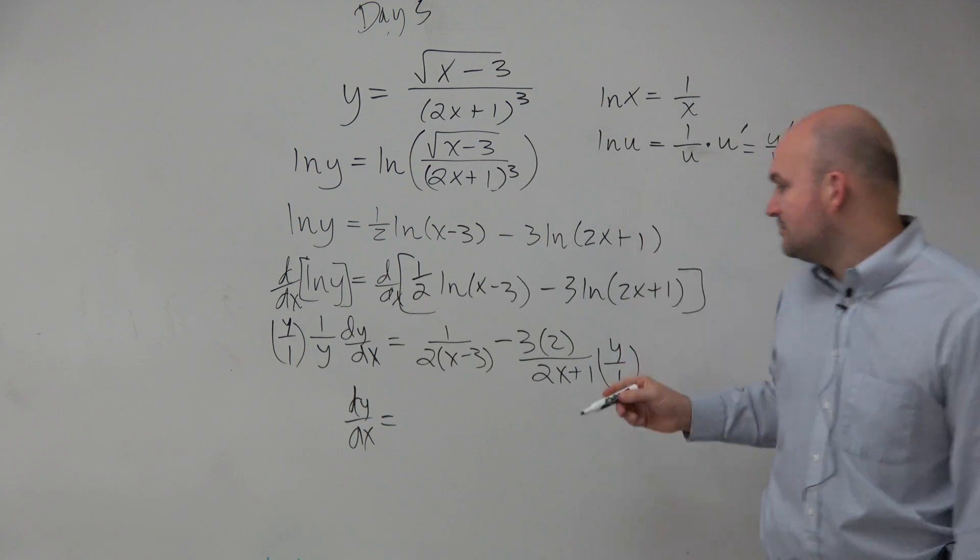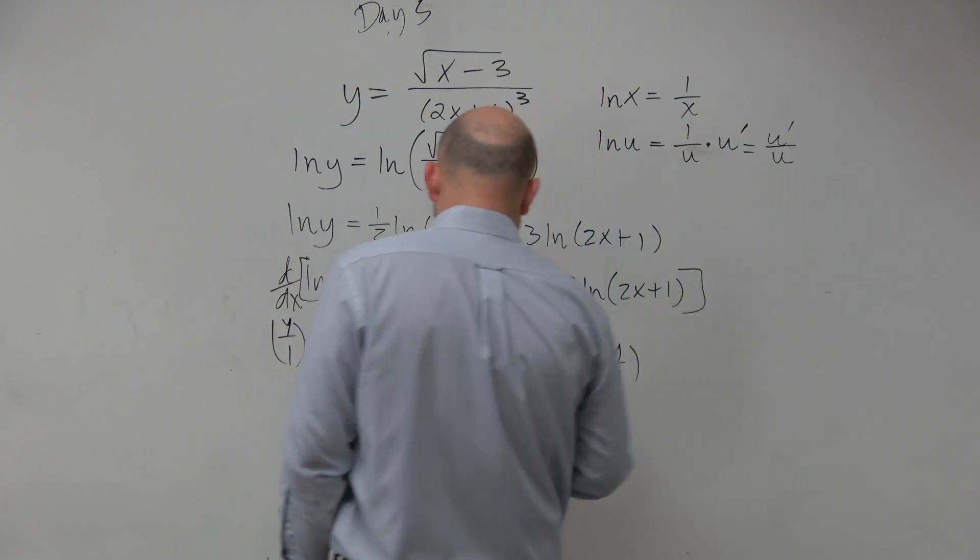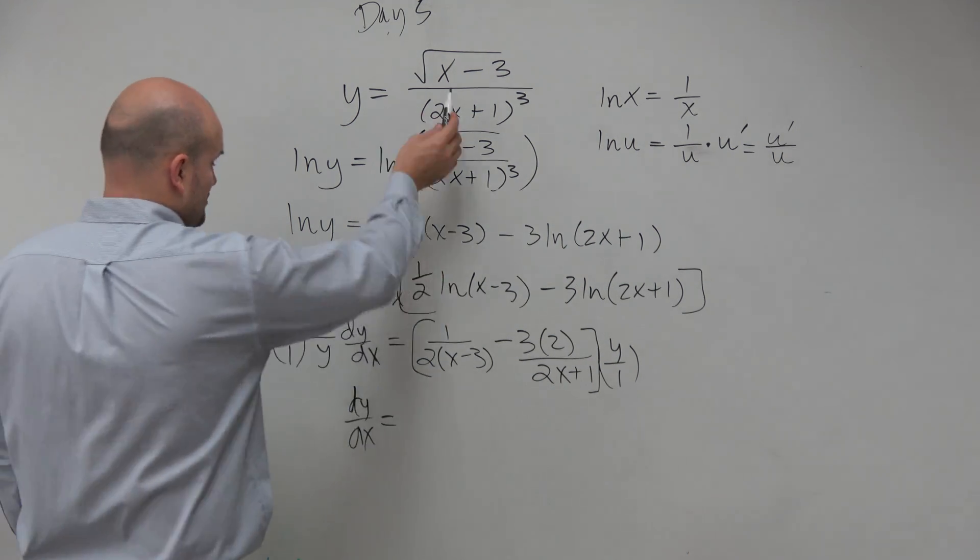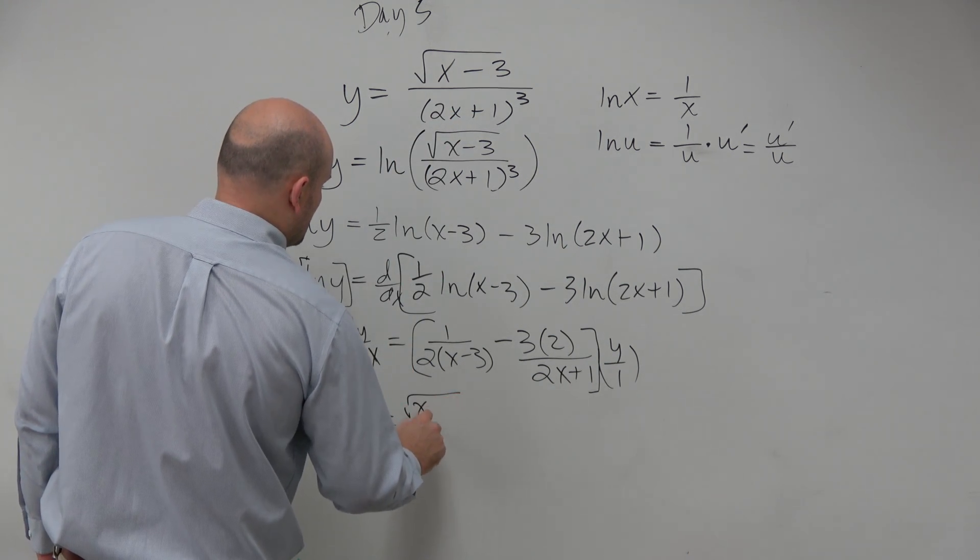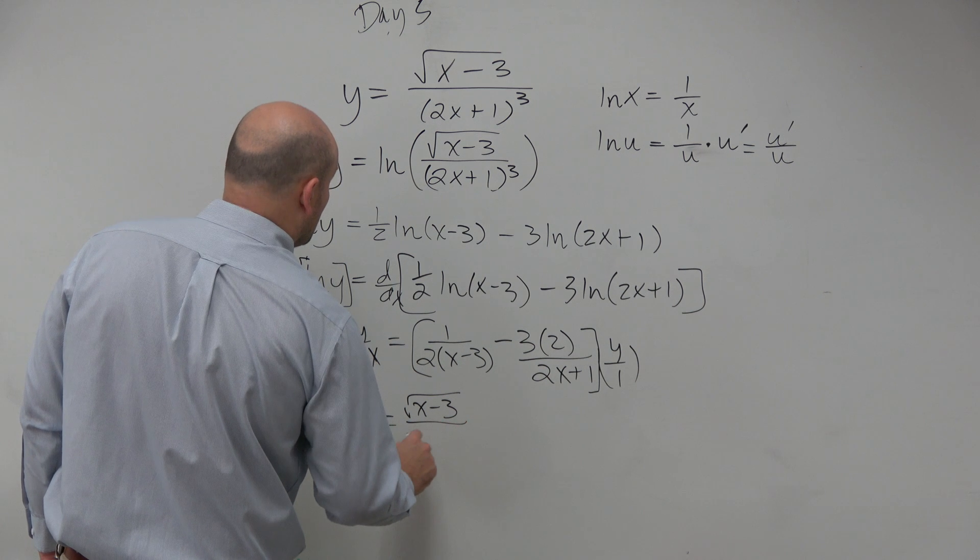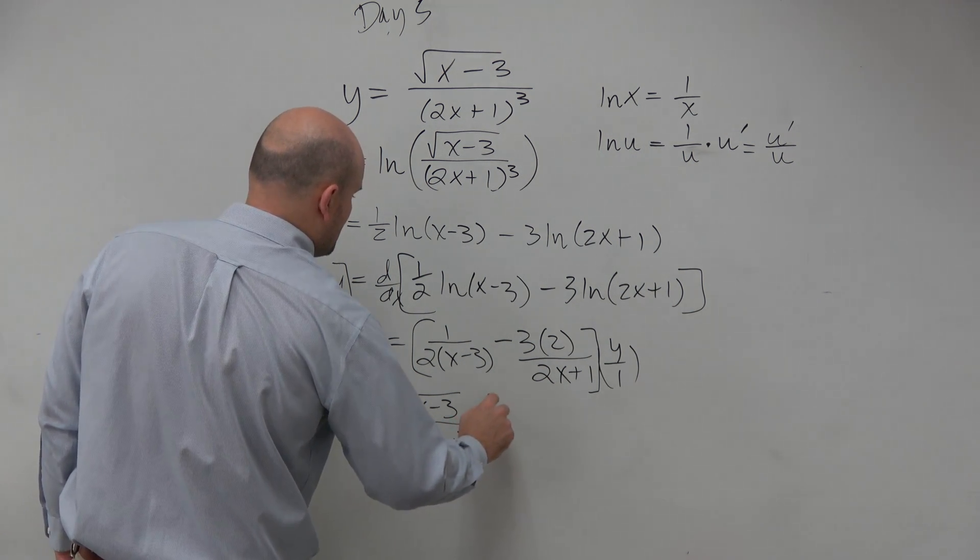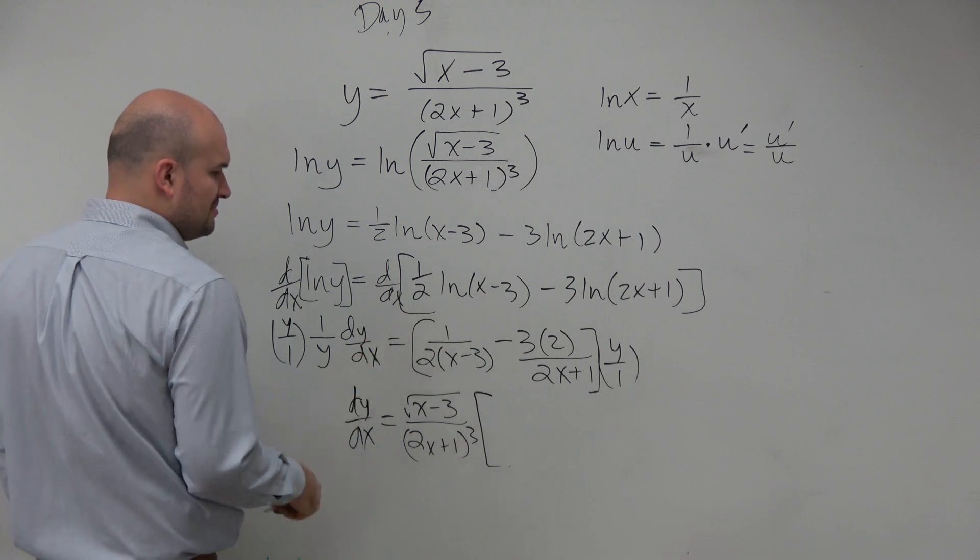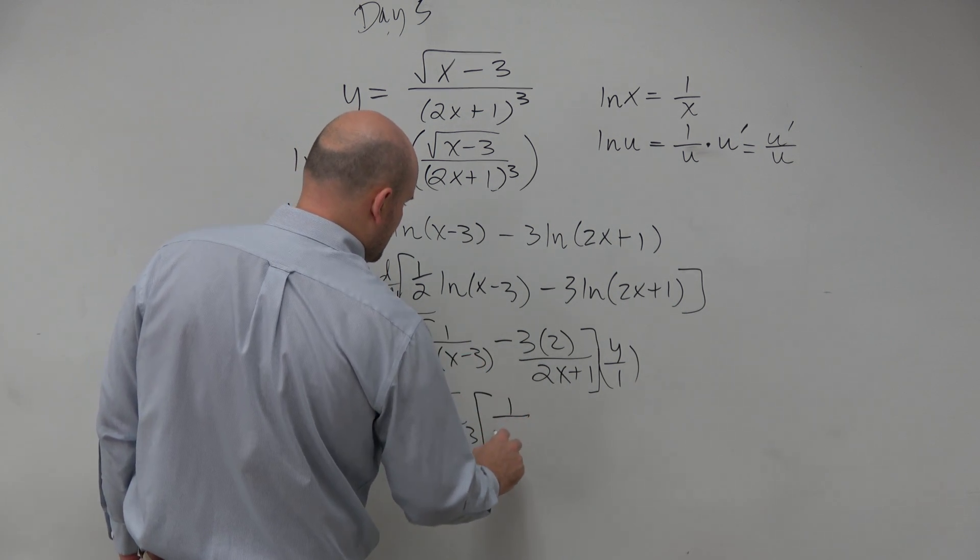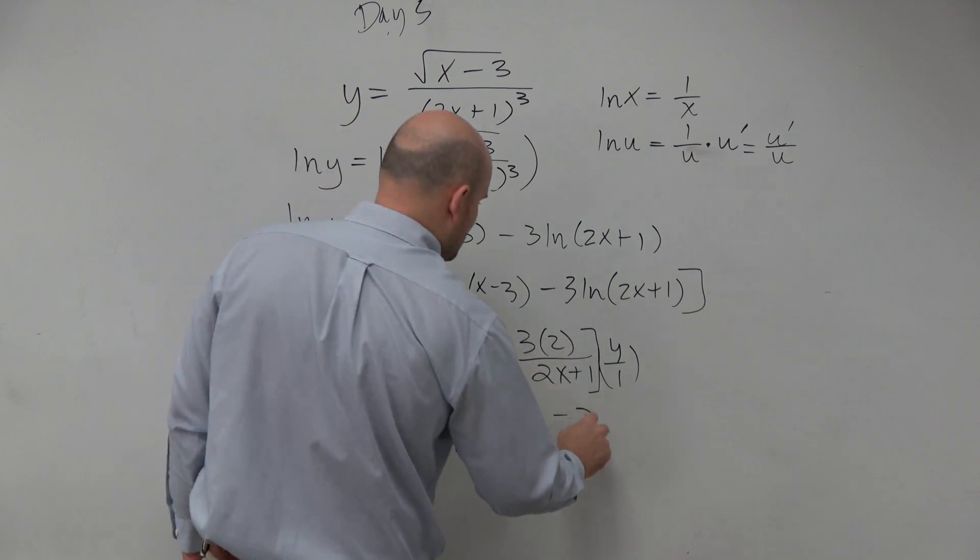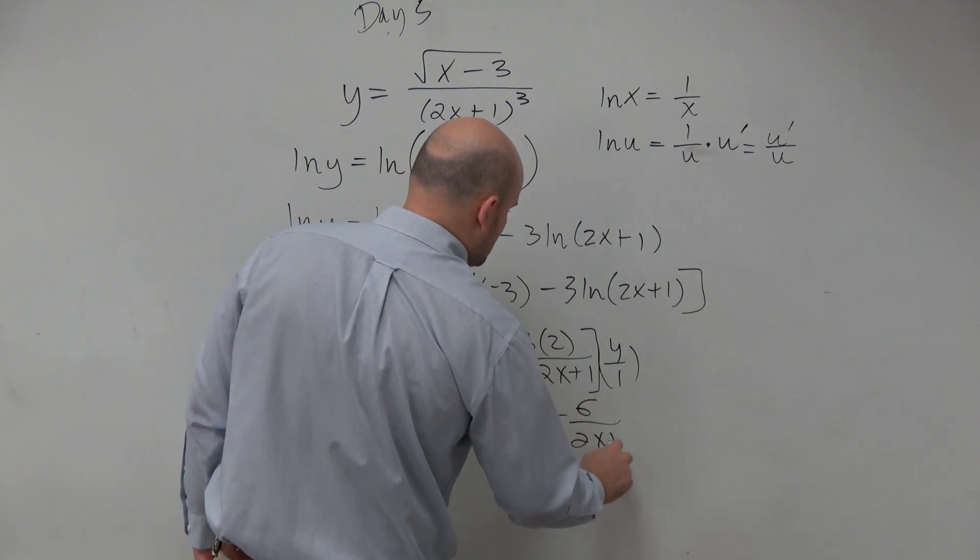A lot of times, we actually write the y in front. We don't really need to distribute it. I don't really see the purpose of distributing what y is. So I'm just going to rewrite it in front: sqrt(x-3) over (2x+1)^3. However, we could probably do some basic simplifying here. I'm going to keep that factored, because we usually like factored things. But then do minus 6 over 2x plus 1.